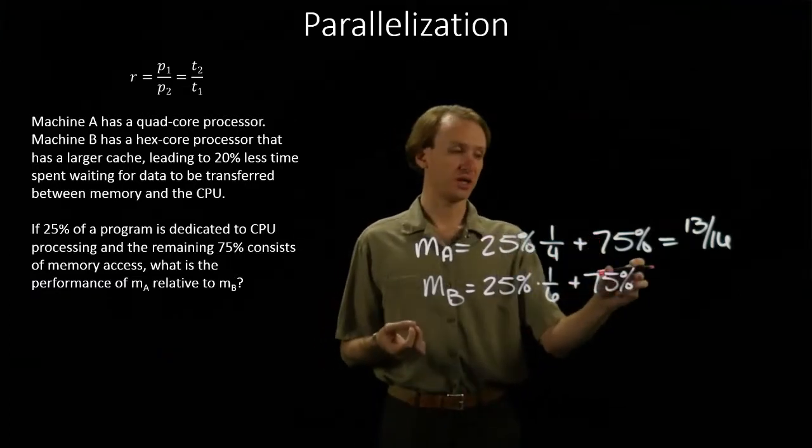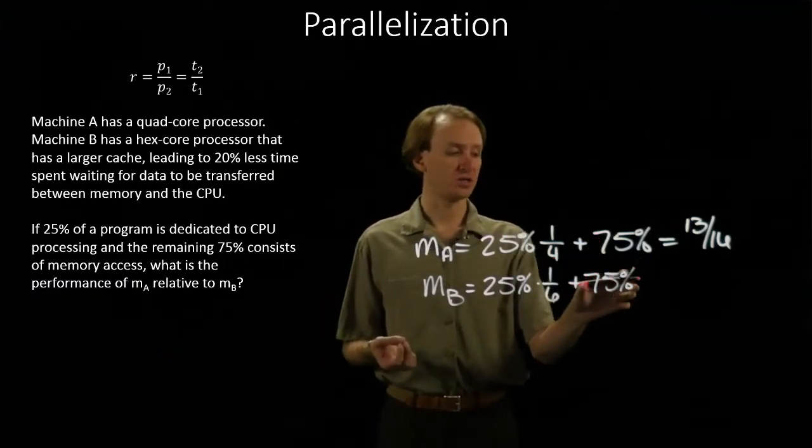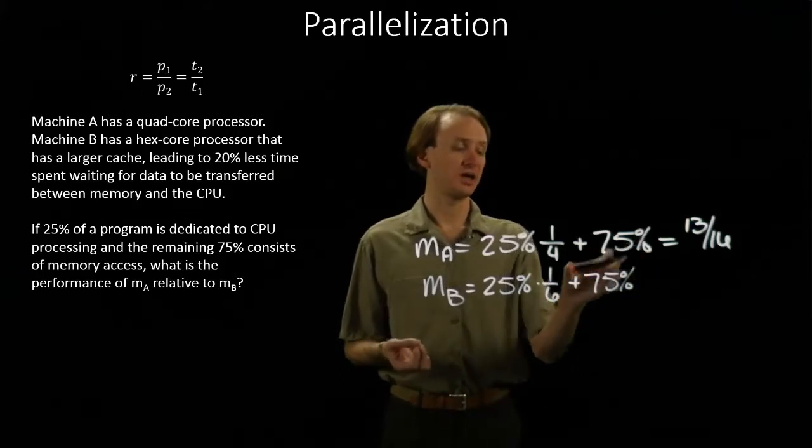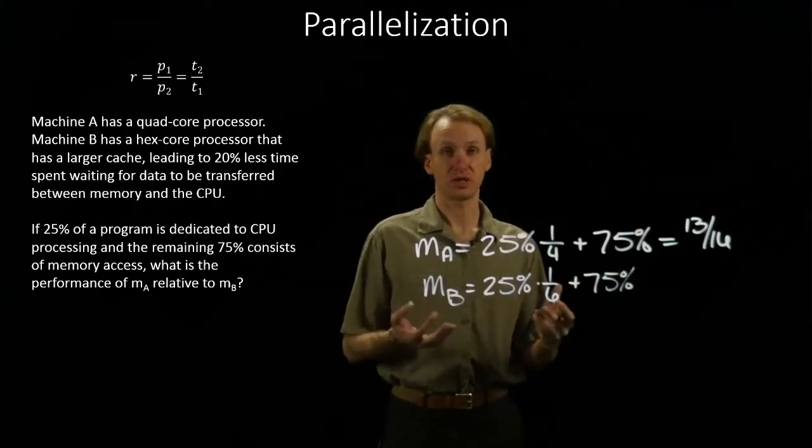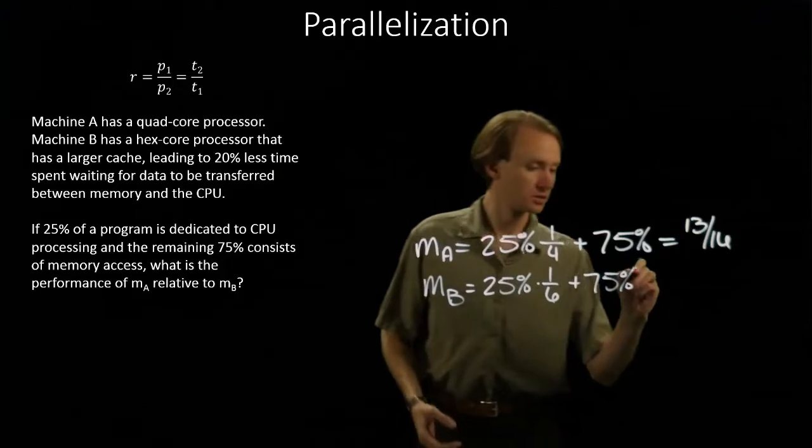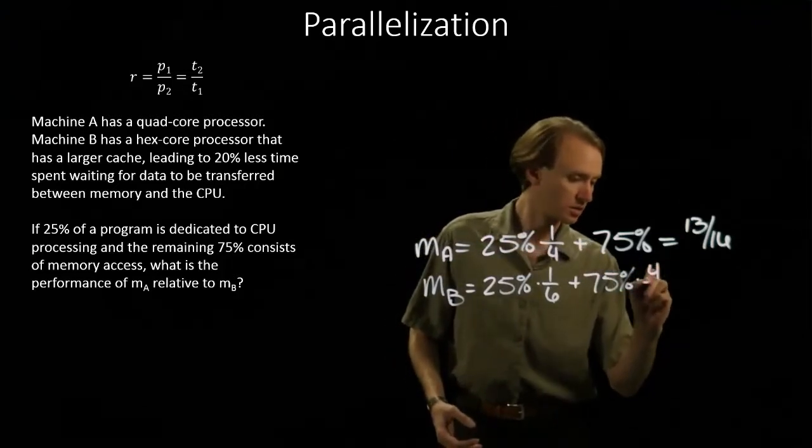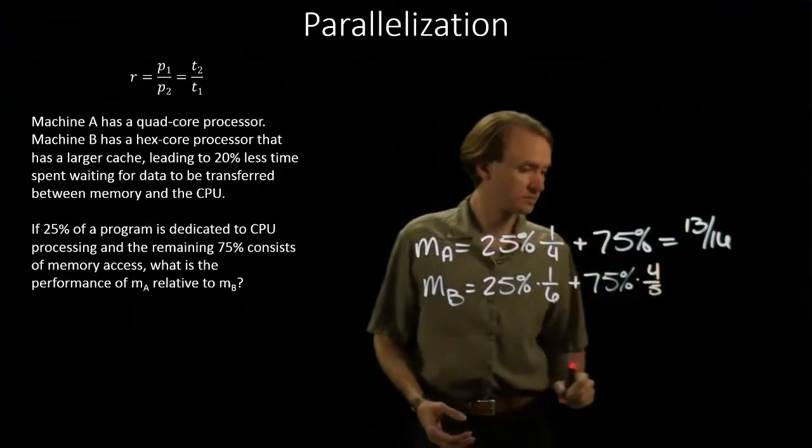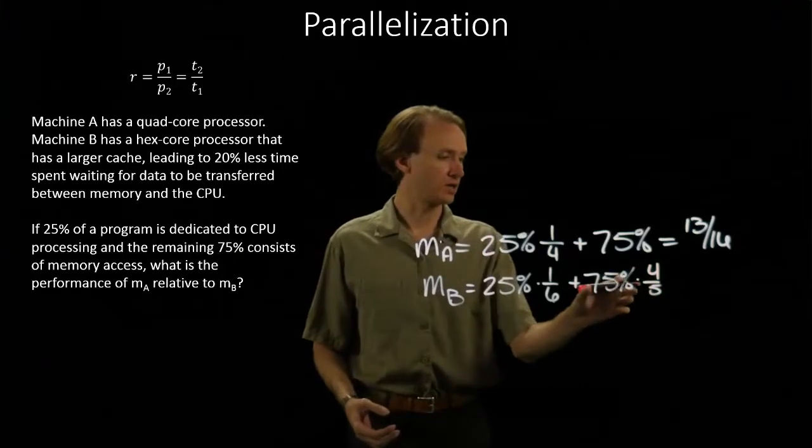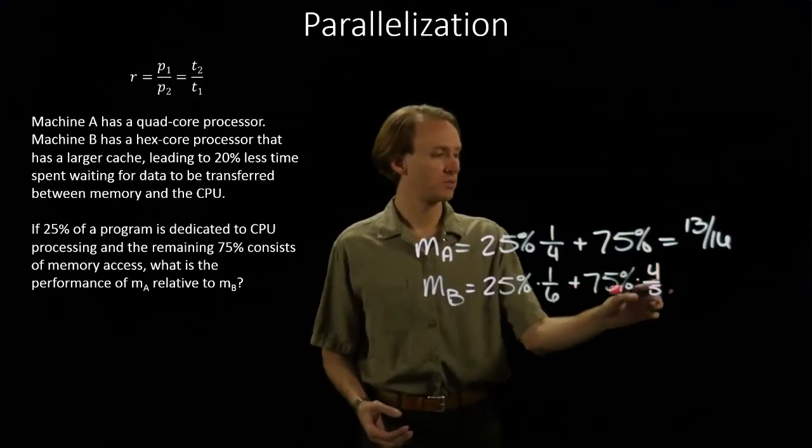Machine B is only going to spend 80% as much time running these memory instructions as machine A did, because of its 20% improvement. So I'll multiply this amount of execution time by the four-fifths.